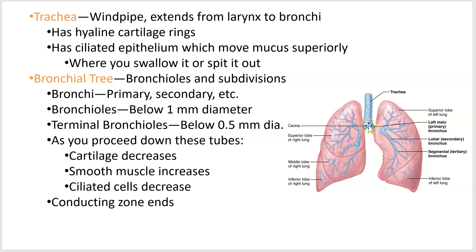Deeper in, you get to the bronchial tree. The first two branches are called primary bronchi — left and right primary bronchus. Then they go secondary bronchi, then tertiary bronchi, and so on until you get below one millimeter in diameter, at which point they are called bronchioles. Once bronchioles get below 0.5 millimeters, they are called terminal bronchioles, which lead right to the alveolar sacs.